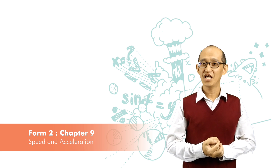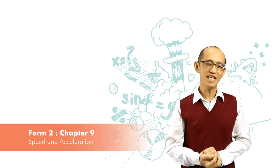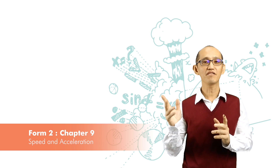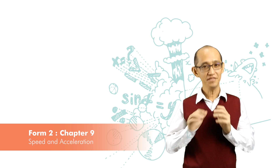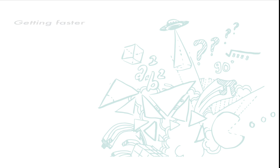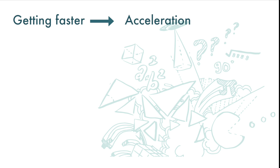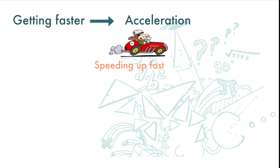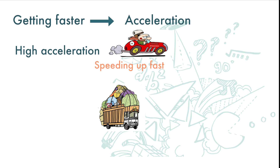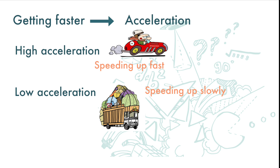Let's recap what we have learned about acceleration, high acceleration, low acceleration, and deceleration. When an object is increasing its speed, meaning it is getting faster and faster, it is called acceleration. If it increases its speed very fast, that is called high acceleration. If it increases its speed slowly, that is called low acceleration.